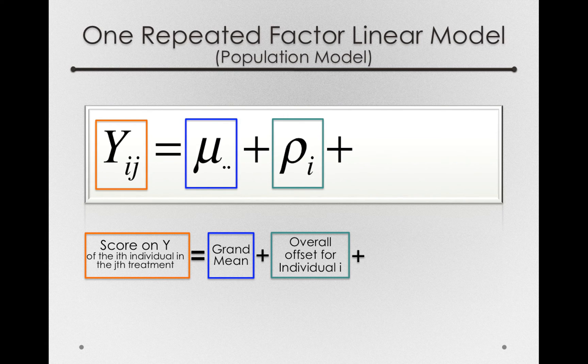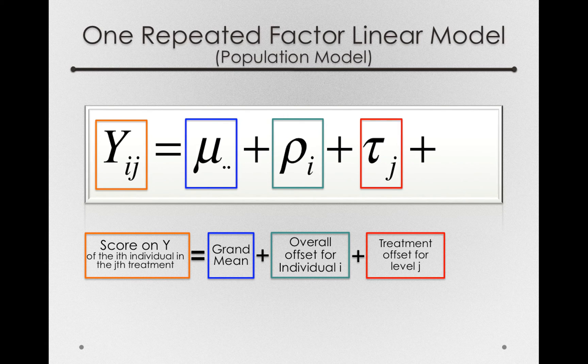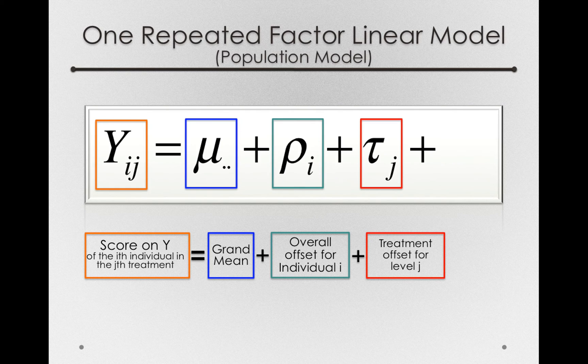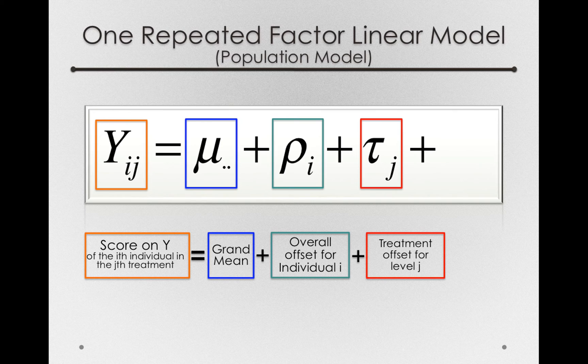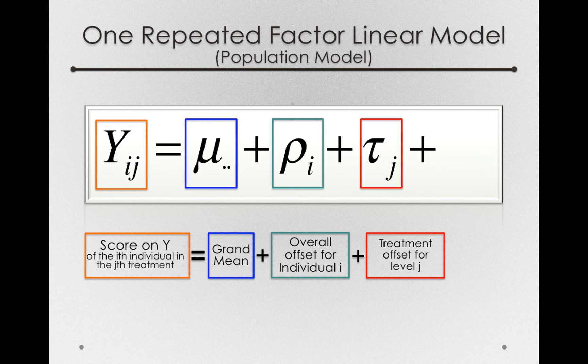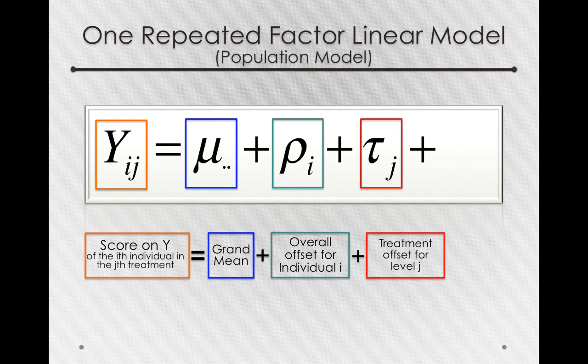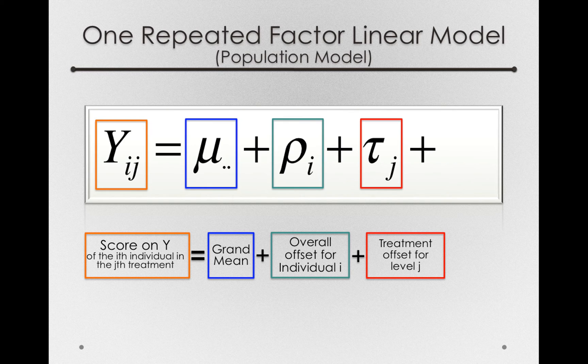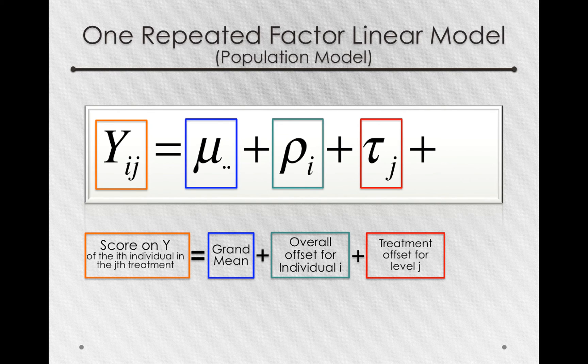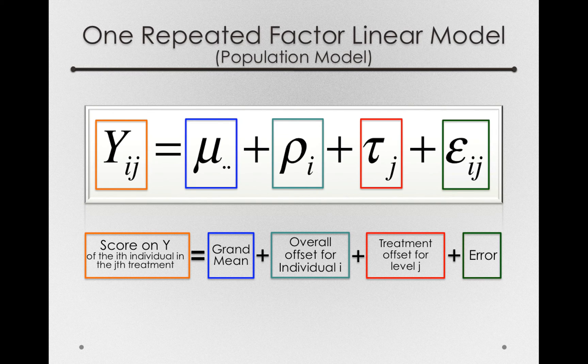Next, we'll have a term associated with our treatment effects. That is, the treatment offset for level j. Now, this will probably be the main interest of our model. We're modeling some factor. We want to see what differences there are among the factor levels. In our case, it'll be wine to start with. And notice that our treatment offsets will be formed like usual, the degree to which one level of wine is different from the grand mean on average. And finally, like usual, we'll have a term for error. So, the ε_ij's.